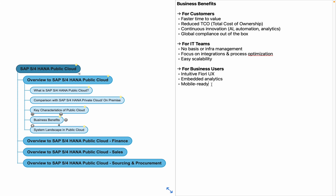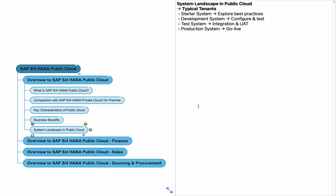The system landscape is very similar to private cloud. In the latest version, public cloud also follows a three-system landscape: development system, test system, and production system — similar to on-premise and private cloud. The development system is used for configuration and testing, the test system is used for integration, unit, and user acceptance testing, and the production system is used for day-to-day real-time activities.